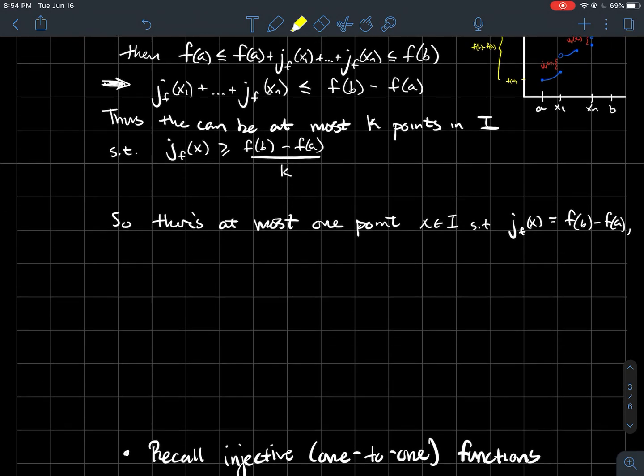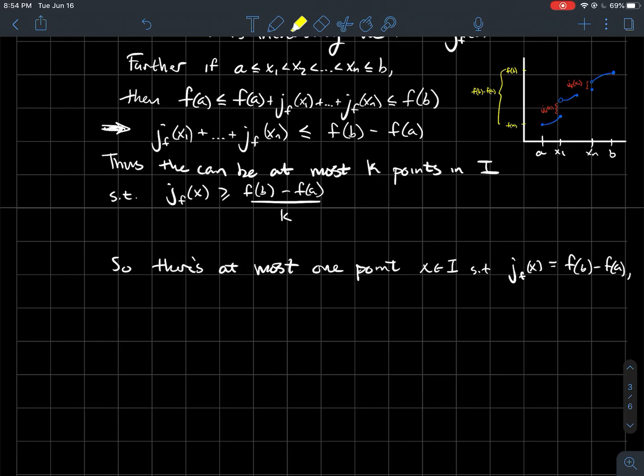So like, just to maybe say this, to draw this out a little bit, there's at most one point in the interval where the jump at x is exactly equal to f of b minus f of a. Similarly, there's at most two points in your interval where the jump at both of those two points is bigger than or equal to kind of the average of f of b minus f of a over two. There's at most three points where the jump at those three points is bigger than or equal to f of b minus f of a over three and etc.